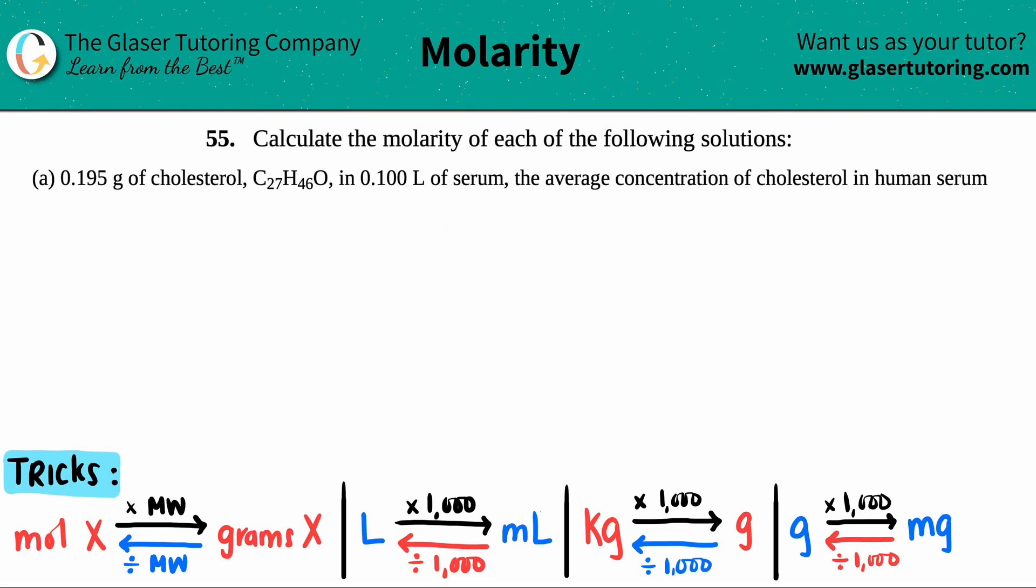Number 55, calculate the molarity for each of the following solutions. In letter A, we have 0.195 grams of cholesterol, C₂₇H₄₆O, in 0.1 liters of serum. This is actually the average concentration of cholesterol in human serum.